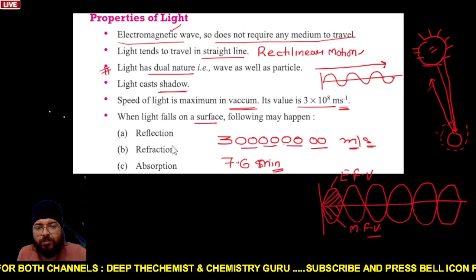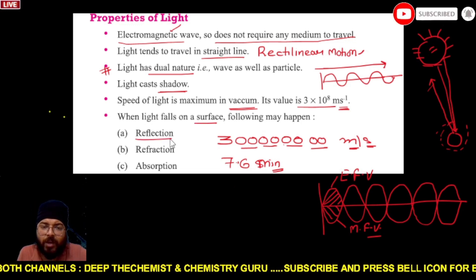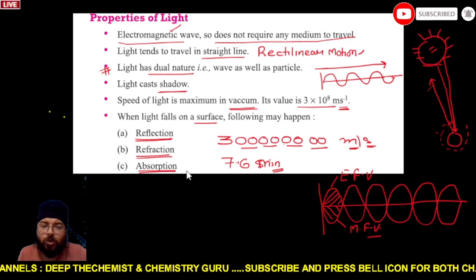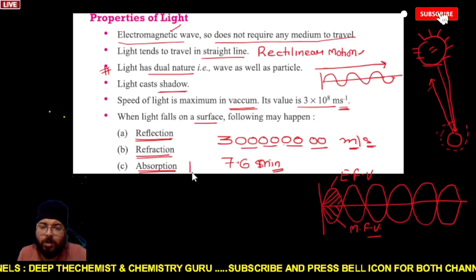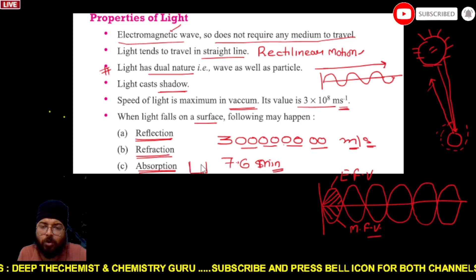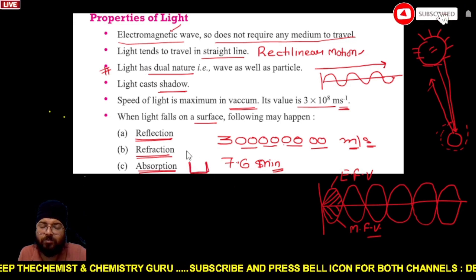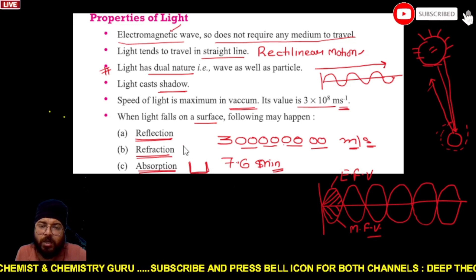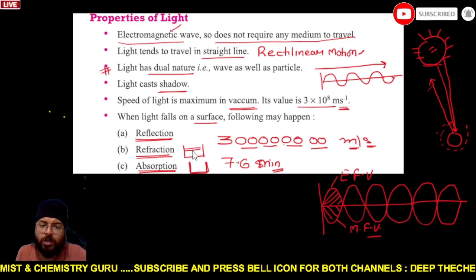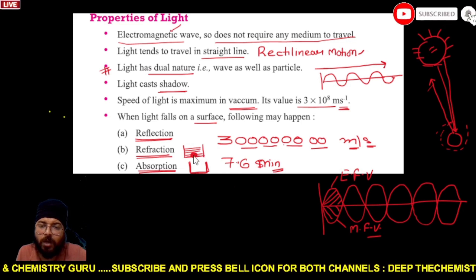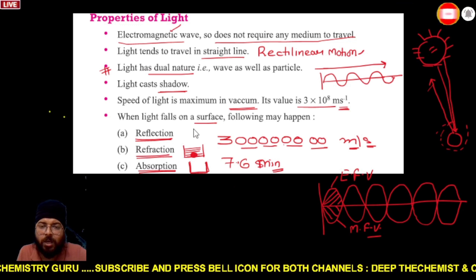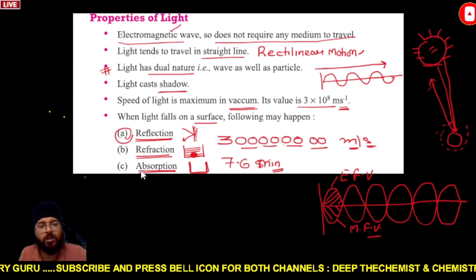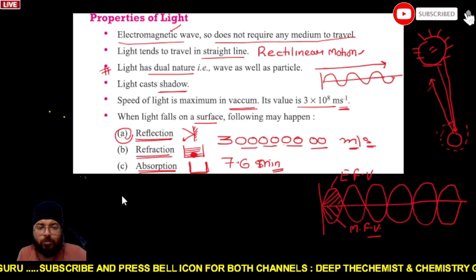When light falls on a surface, reflection and absorption occur. When we wear black-colored clothing in the sun, it feels very warm because dark colors absorb heat waves — that is, light energy is absorbed, giving us a warm feeling. If you have seen a glass of water with a coin placed in it, you can see it from the top — this is due to reflection.